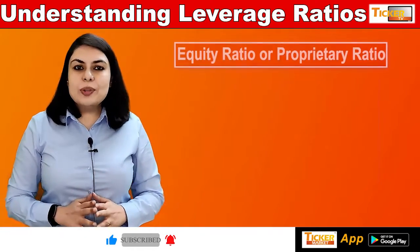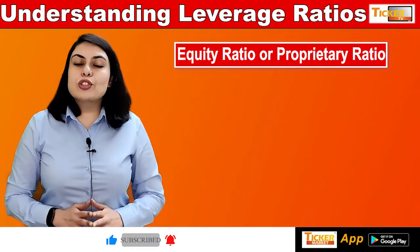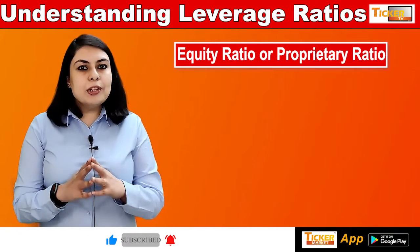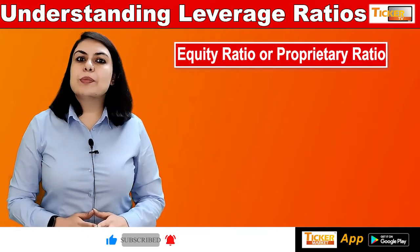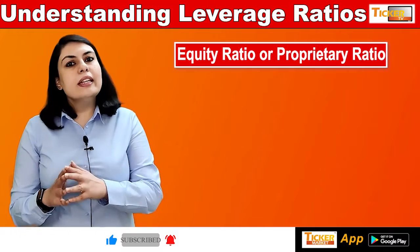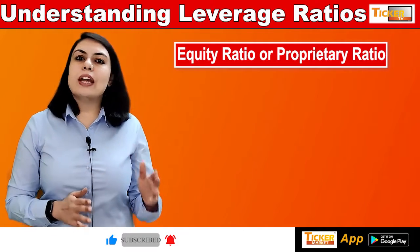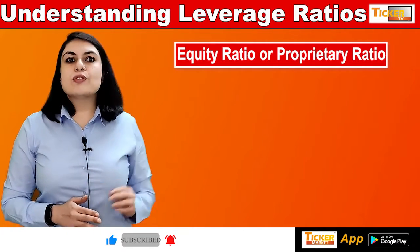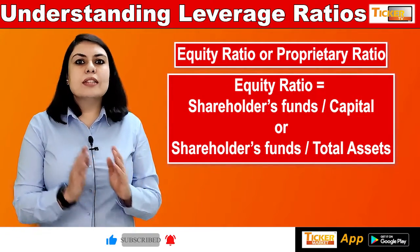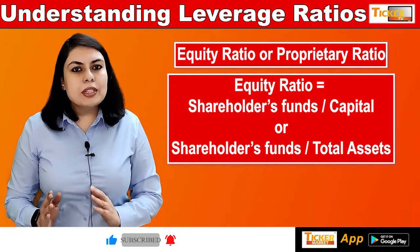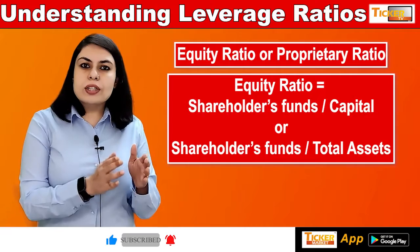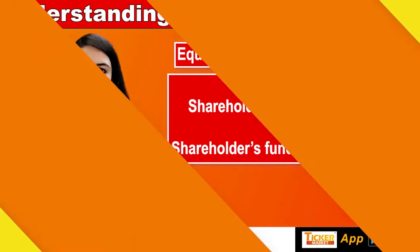Third is the equity ratio, also known as the proprietary ratio. It establishes a relationship between the proprietors' funds — that is, the shareholders' fund — and the net assets or capital. It is expressed as shareholders' funds divided by capital, or alternatively as shareholders' funds divided by total assets.